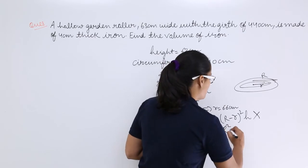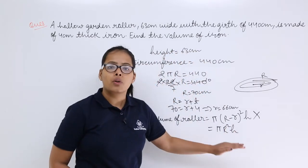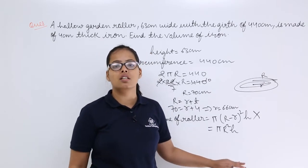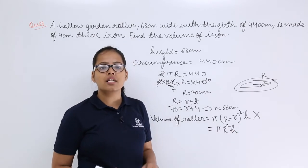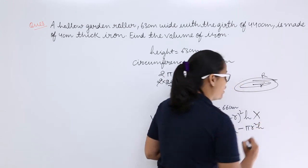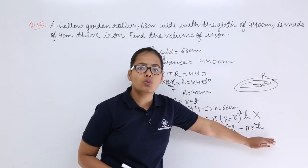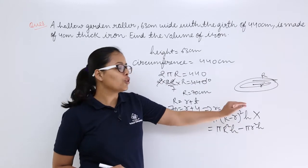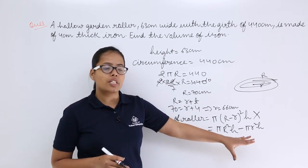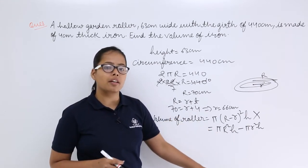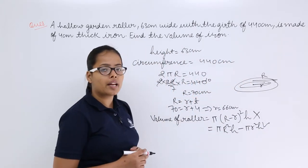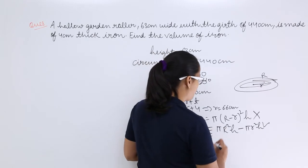The formula you are going to use is: volume equals π R squared h minus π r squared h. π R squared h is the volume considering the external radius — that is the volume of the external cylinder. π r squared h is the volume considering the inner radius. When you subtract the inner volume from the external volume, you get the volume including the thickness. So the correct formula is π R squared h minus π r squared h.